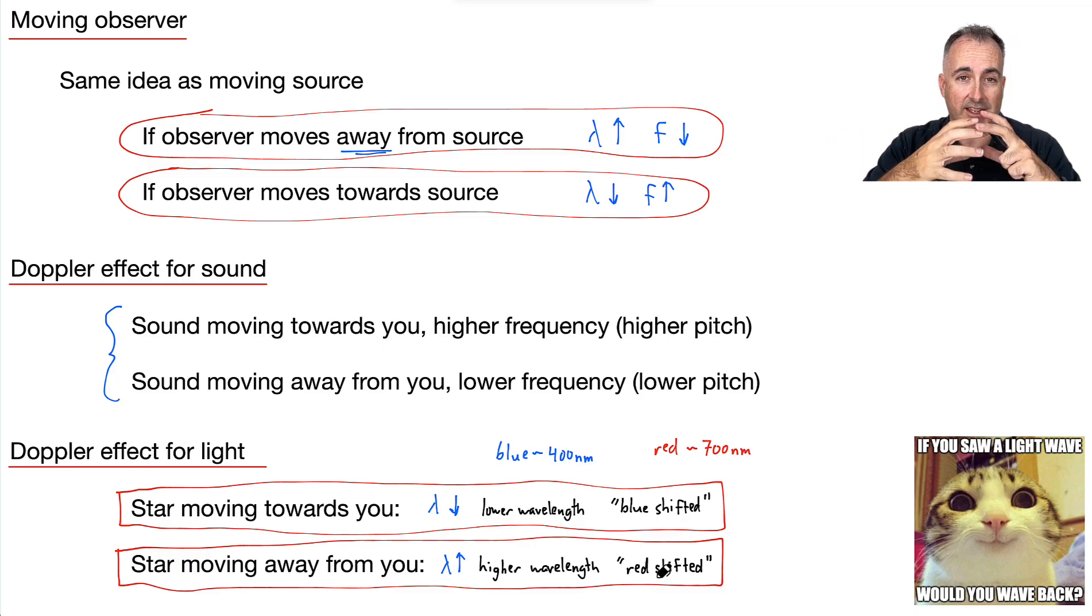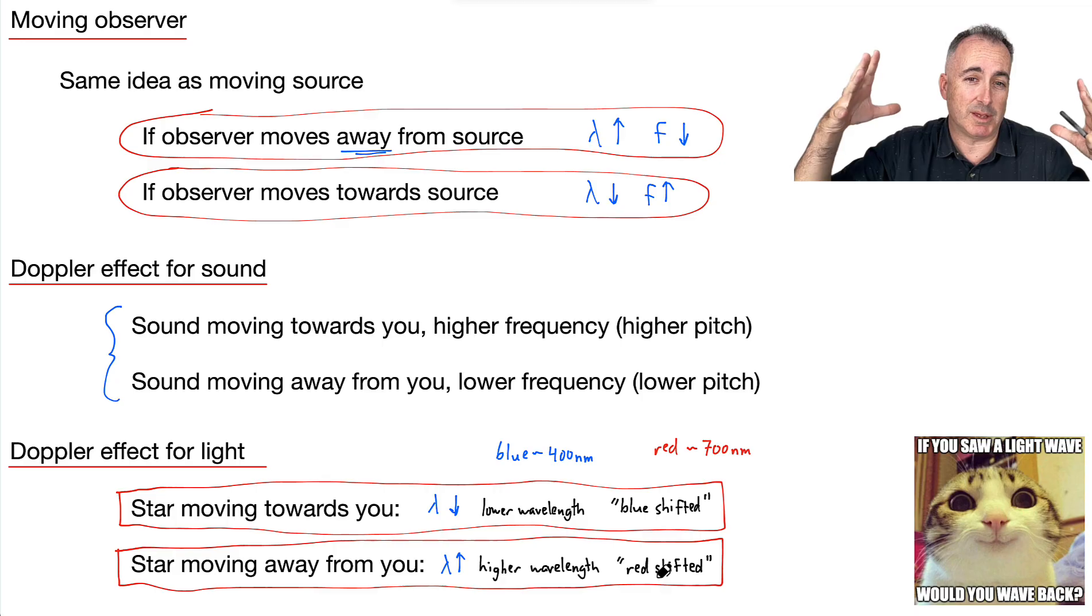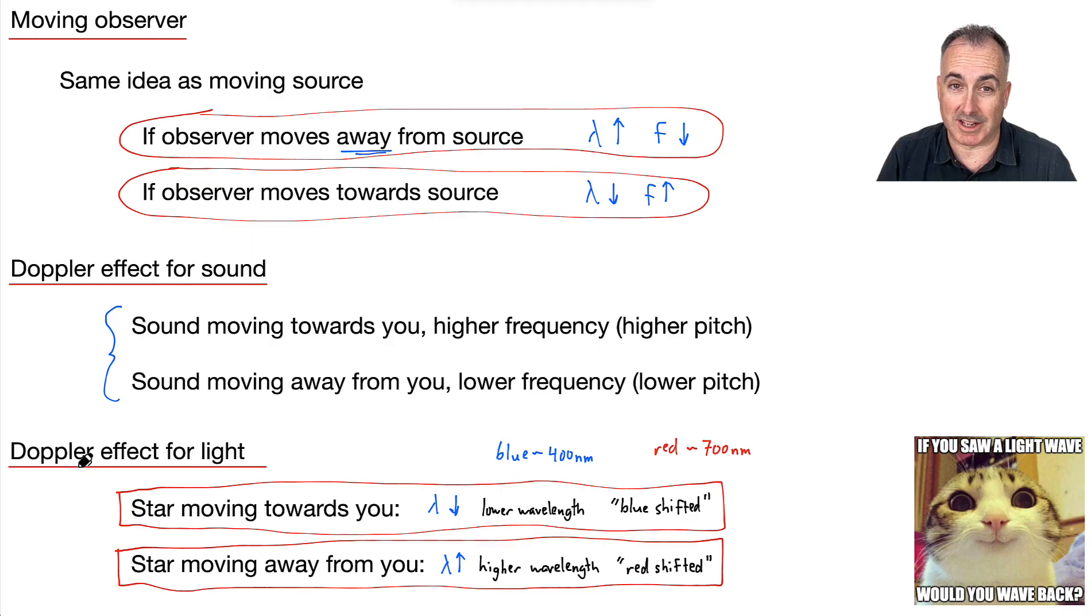Because if everything seems to be going away from us, with a few exceptions, like I said, like the Andromeda galaxy. But otherwise, if everything's going away from us, then it makes sense that maybe everything was together at once, and that's what we call the Big Bang Theory. So this Doppler effect for light tells us a lot about the universe.